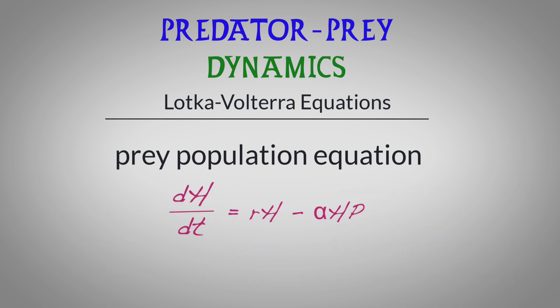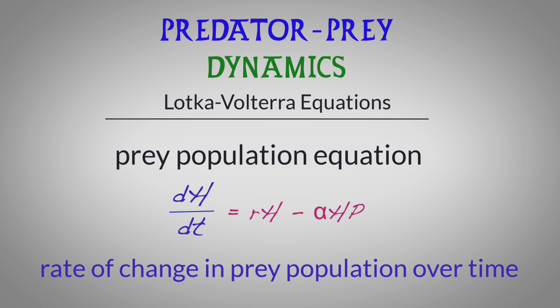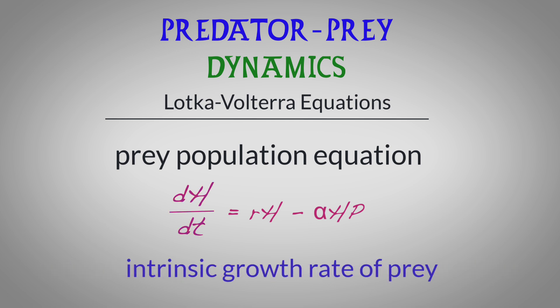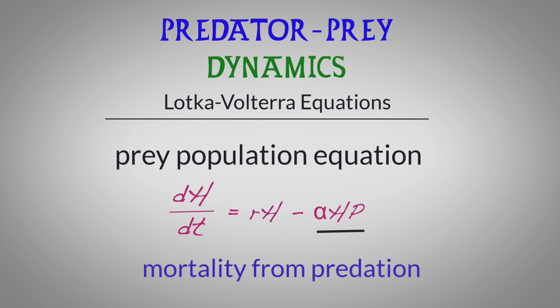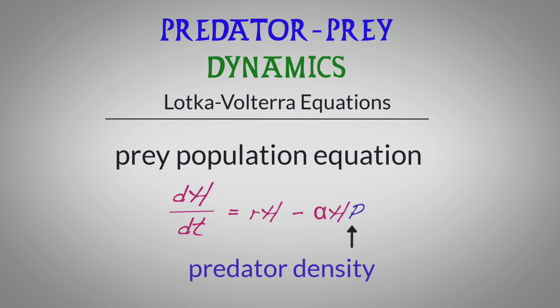These opposing forces combine into the prey population equation: dH/dt equals Rh minus alpha Hp. Here, dH/dt represents the rate of change in the prey population over time. So the change in prey population over time is determined by the intrinsic growth rate of the prey population — a function of growth rate and prey density — minus the mortality caused by predation, which depends on both prey density and predator population density.